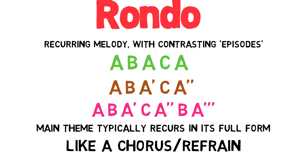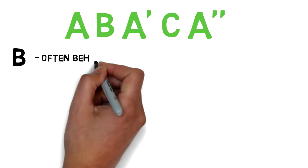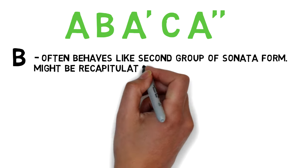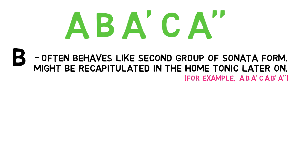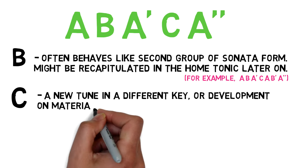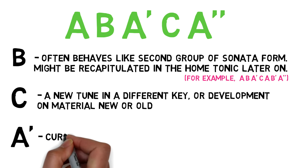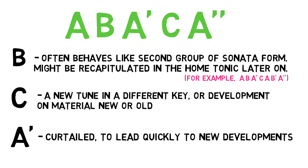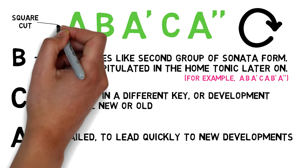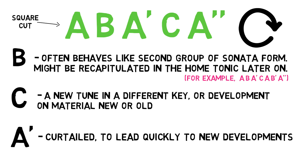Think of the rondo's main theme like a chorus or refrain in a pop song which keeps coming back in its full form. The first episode often behaves like the second group of a sonata form movement and might be recapitulated in the home tonic in the last stages of the rondo. The second episode might be a new tune in a different key or a process of development on material new or old. The first return of the main theme is typically curtailed so that it can lead quickly to more development. The lines can get a bit blurry between sonata form and rondo, but normally it's quite clear because of how the main theme keeps coming back, and you'll rarely see something labelled rondo unless it's at the finale.